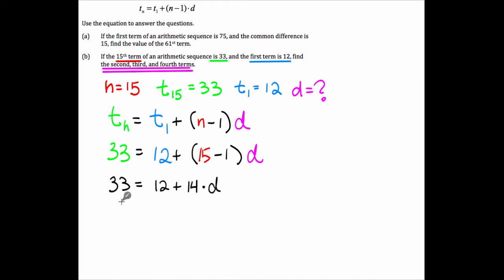33 equals 12 plus 14 times d. Do all the work. What you end up with is a common difference of 1.5.